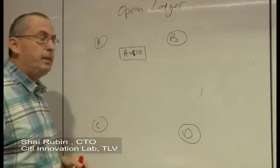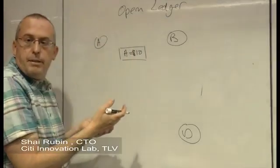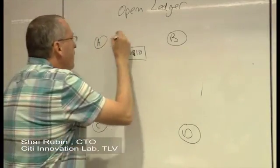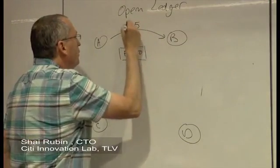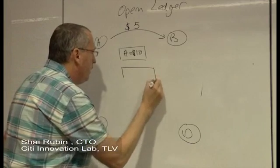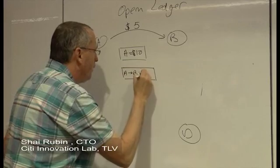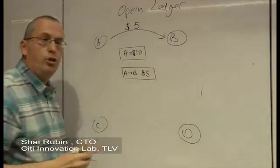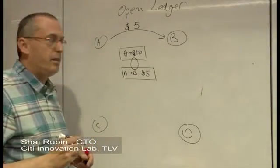Now let's see the concept of the open ledger and how it is being implemented in blockchain. Let's say that A wants to move to B $5. What is going to happen is that we are going to add a transaction, A moved to B $5, and we are going to link it into the already existing transactions.